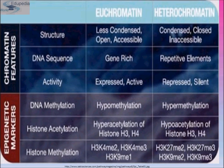Now, the differences between euchromatin and heterochromatin. When it comes to structure, euchromatin is less condensed, open, and accessible. On the contrary, heterochromatin is condensed, closed, and inaccessible. Regarding DNA sequences, euchromatin DNA sequences are generally rich in genes, whereas heterochromatin DNA sequences are repetitive elements. When it comes to activity, euchromatin is expressed and active, while heterochromatin is repressed and silent.